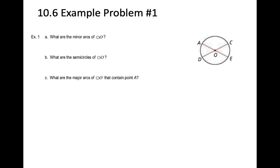Let's do some example problems — pause and try these yourself first. The problem is asking: what are the minor arcs of circle O? There are four of them: AD, AC, CE, and ED — four minor arcs all the way around the circle.